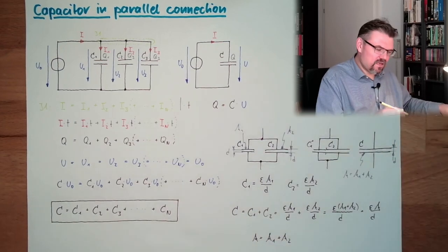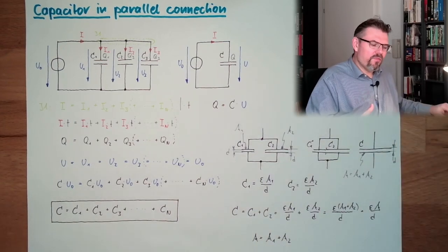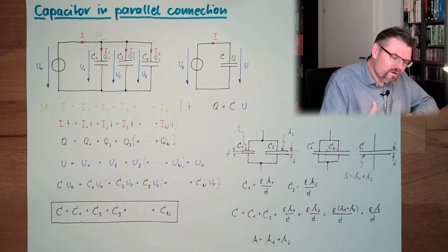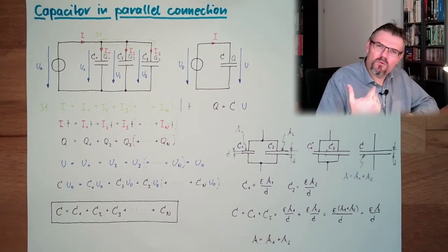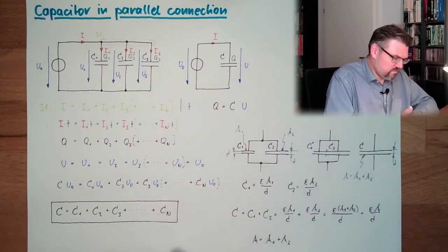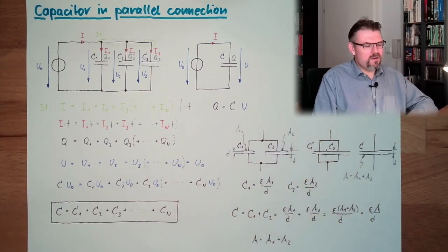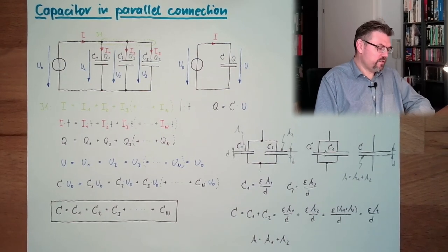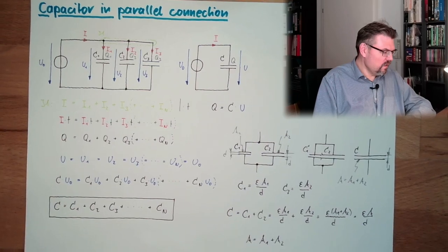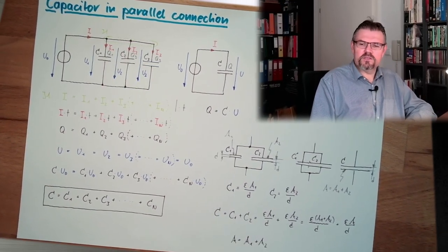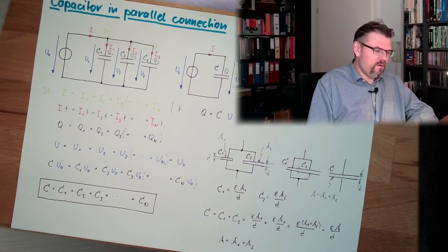This is how I can imagine this, that the capacitance is getting more. And we said, okay, the more capacitance, the more area a capacitor has, the more capacitance it can offer. This is how you can remember what is parallel, what is serial connection in a capacitive way. Now we have replacement capacitors for series and parallel connections.